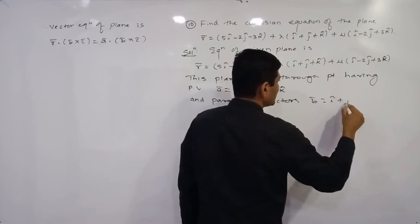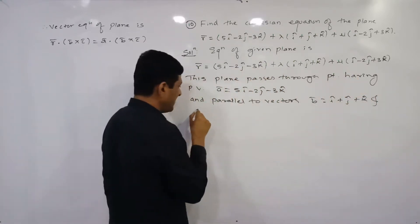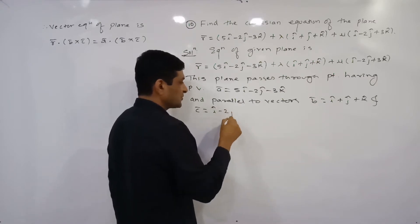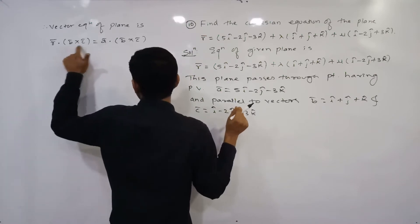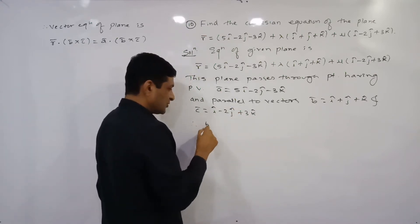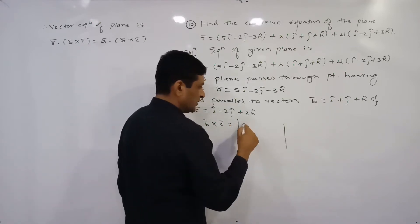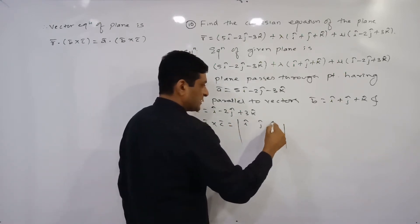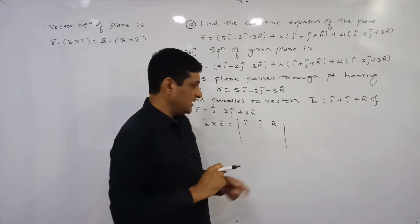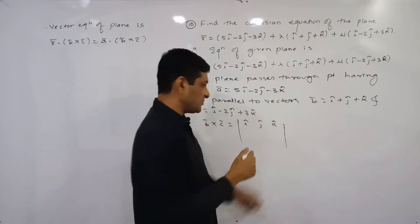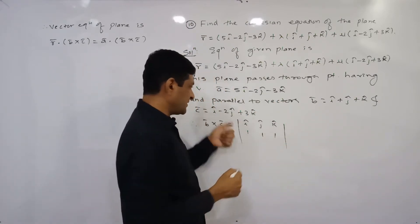The plane is also parallel to vectors b̄ = î + ĵ + k̂ and c̄ = î - 2ĵ + 3k̂. To apply the vector equation formula, we need the cross product of b̄ and c̄. The cross product is found using a determinant: first row is î, ĵ, k̂; second row has coefficients from b̄ as 1, 1, 1; and third row has coefficients from c̄ as 1, -2, 3.